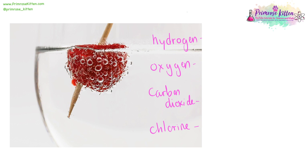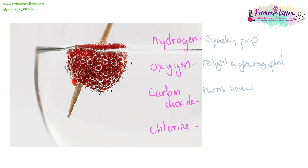In an experiment, when you see bubbles coming off something, chances are it's going to be one of these four types of gases: hydrogen gas, oxygen gas, carbon dioxide, or chlorine gas. To test for hydrogen gas, it is a squeaky pop. To test for oxygen gas, it is going to relight a glowing splint. Carbon dioxide turns lime water cloudy. And chlorine gas is going to bleach damp litmus paper.